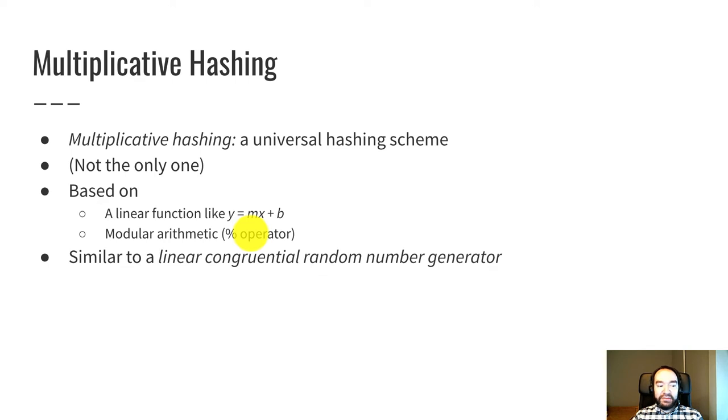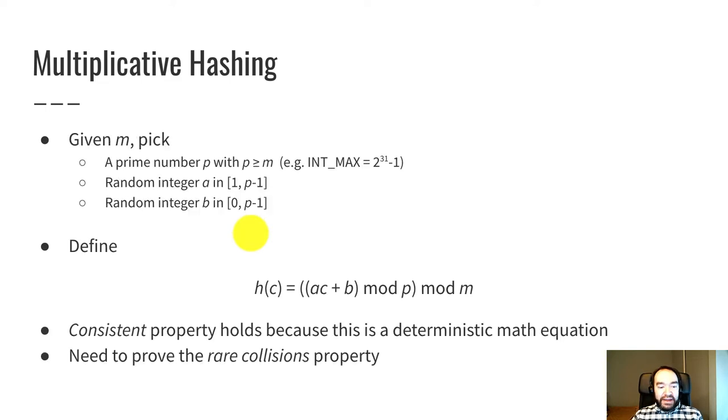Multiplicative hashing is similar to something called a linear congruential random number generator. That's one kind of random number generator. And it's often used to implement rand. So the rand function that you might have called before often generates random numbers in the same way that we generate indices here.